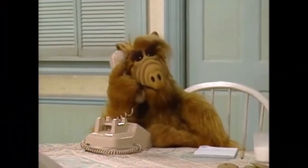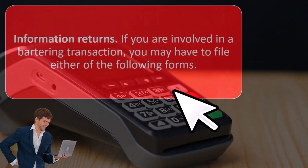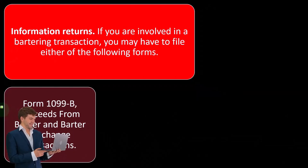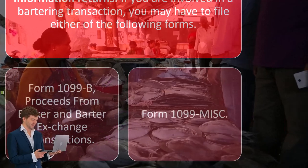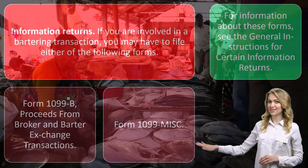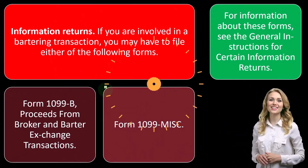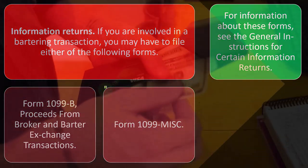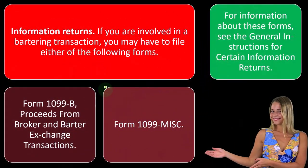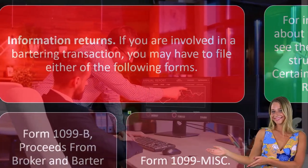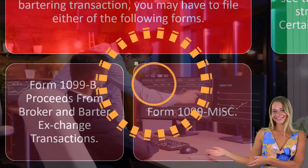Information returns. If you are involved in a bartering transaction, you may have to file either of the following forms: Form 1099-B, proceeds from broker and barter exchange transactions, or Form 1099 Miscellaneous. These are the reporting forms for the bartering situation because you still have an income situation. The IRS wants to pressure the payer to report the income to the person that received the income to double-check that they report their income. For more information, see the general instructions for certain information returns.